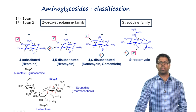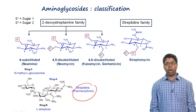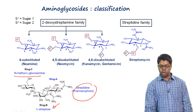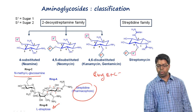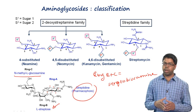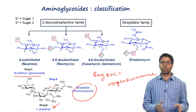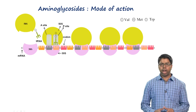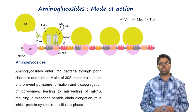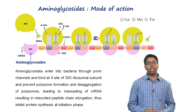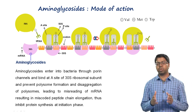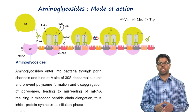Streptomycin is an aminoglycoside containing a streptidine ring glycosidically linked to L-streptose, which is linked to N-methyl-L-glucosamine; together, L-streptose and N-methyl-L-glucosamine form streptobiosamine. Aminoglycosides enter bacteria by active transport or facilitated diffusion, bind at the A site of the 30S ribosomal subunit, prevent polysome formation, cause disaggregation of polysomes into non-functional monosomes, leading to misreading of mRNA and miscoded peptide elongation — thus inhibiting protein synthesis at the initiation phase.